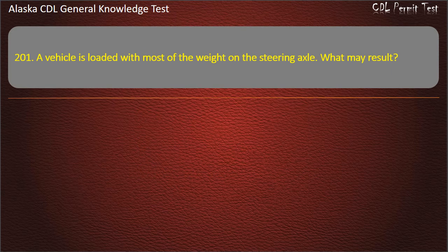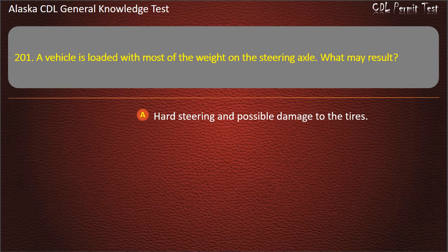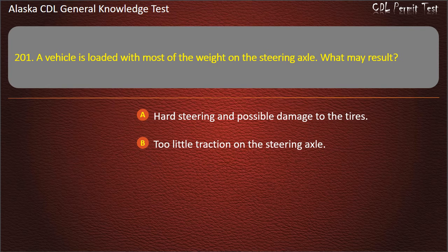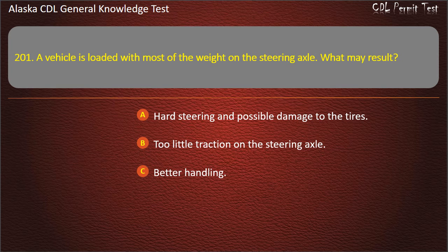Question 201. A vehicle is loaded with most of the weight on the steering axle. What may result? Hard steering and possible damage to the tires, too little traction on the steering axle, or better handling. Answer: Hard steering and possible damage to the tires.